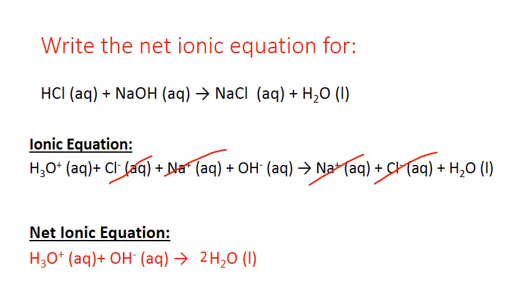What remains is the net ionic equation. It needs a coefficient of 2 in front of water to balance hydrogen and oxygen, and now it is balanced. This net ionic equation — the reaction between hydronium ion and hydroxide ion to produce liquid water — is the heart of most neutralization reactions. Most neutralization reactions give you the same net ionic equation, because hydronium ion is the characteristic component of acids and hydroxide ion is the characteristic component of bases. In a neutralization reaction, these two characteristic components combine to form a neutral product: liquid water.